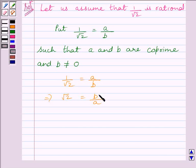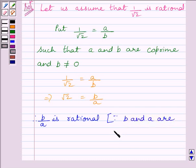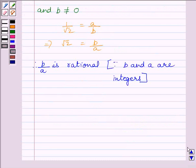Now we know B and A are integers, so B upon A must be rational. So we can write B upon A is rational. Now, B upon A is equal to root 2, so this implies root 2 is also rational.